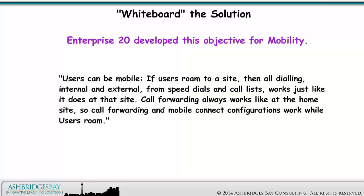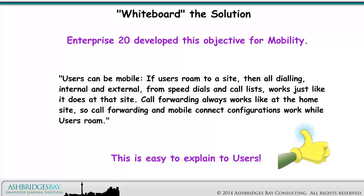Users can be mobile. If users roam to a site, then all dialing — internal and external, from speed dials and call lists — works just like it does at that site. Call forwarding always works like at the home site, so call forwarding and Mobile Connect configurations work while users roam. This is easy to explain to users.